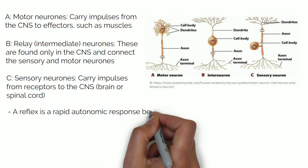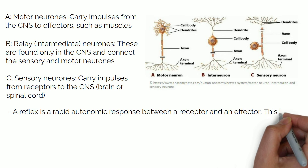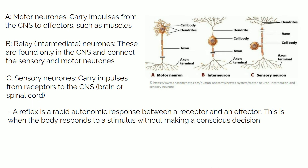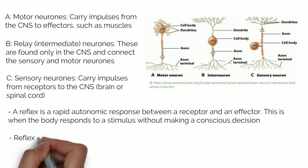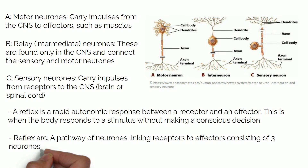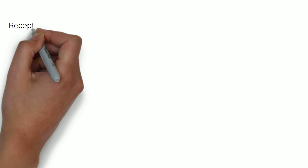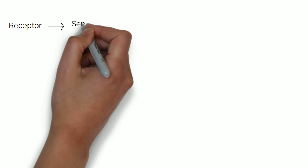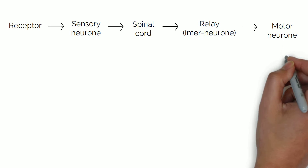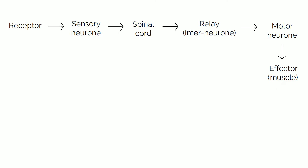A reflex is a rapid autonomic response between a receptor and an effector — this is when the body responds to a stimulus without making a conscious decision. A reflex arc is a pathway of neurons linking receptors to effectors, consisting of three neurons from receptor to effector: starting with the receptor, to sensory neuron, to spinal cord, to relay or interneurone, to the motor neuron, and to the effector, such as a muscle.